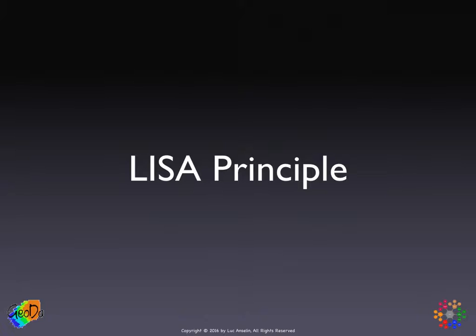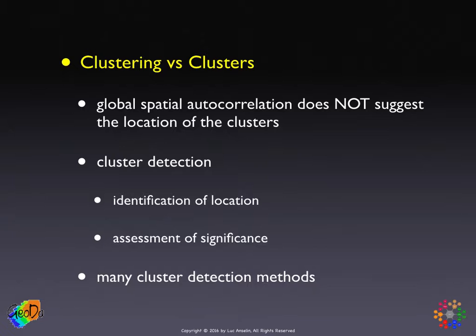What is the idea behind the local indicators of spatial association — the principle behind LISA? First, we have to step back and revisit some ideas from last time when we looked at local versus global spatial autocorrelation. Global spatial autocorrelation refers to clustering because it's about the whole pattern — one number summarizes the pattern — versus clusters, which are about specific locations that are special.